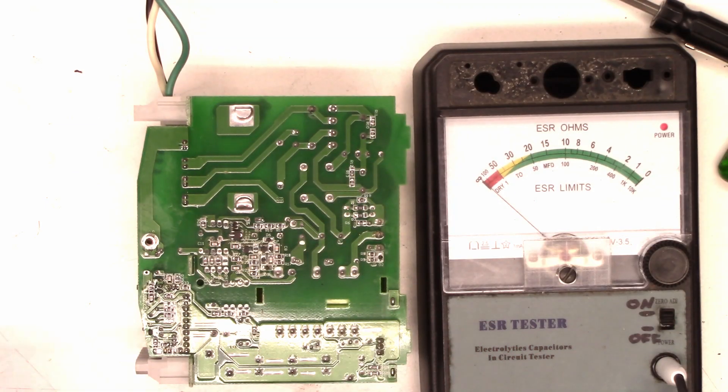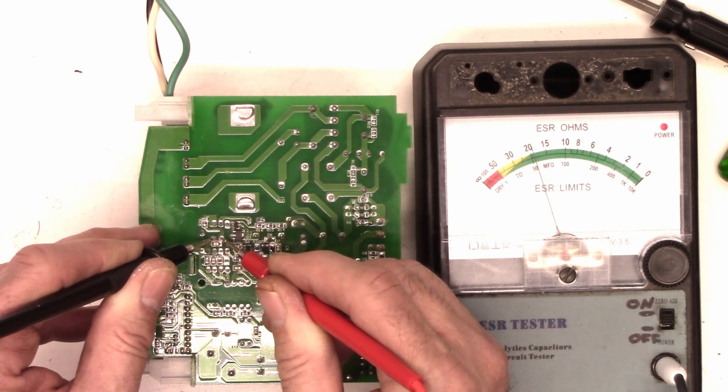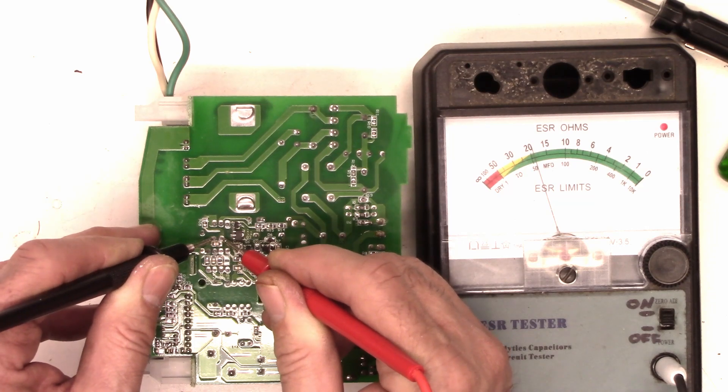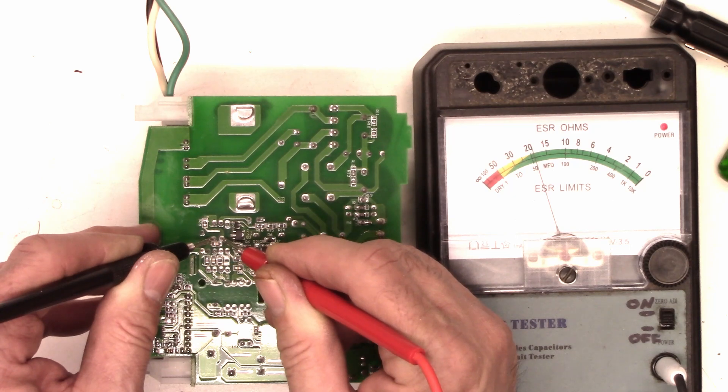So I've got my ESR meter here. And so let's go ahead and check that little capacitor that I saw. So it checks just under 20 ohms. Now if that's a one microfarad capacitor, I'd be okay with that. But anything over a one microfarad, I'd like to see a lower ESR.